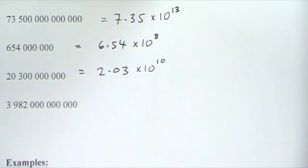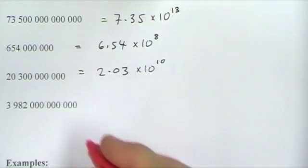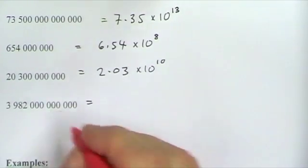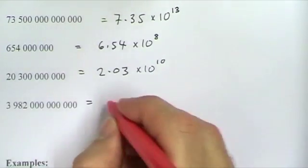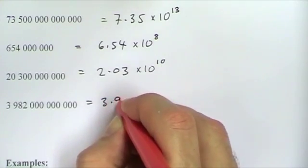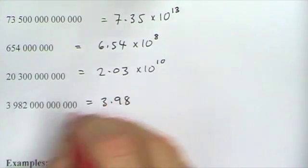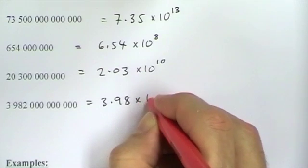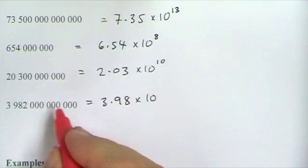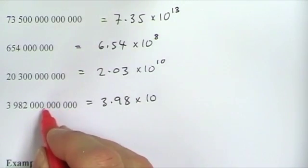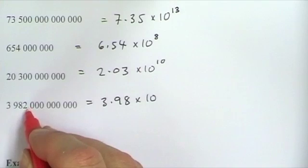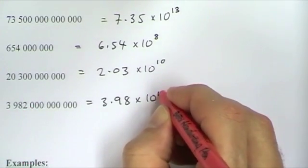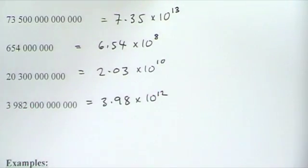For our last large number, the number part is 3.98 — rounded to 3 figures. The decimal place has moved 12 places, so it's 3.98 times 10 to the 12.